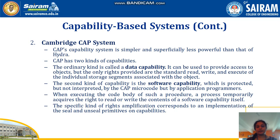The second type of compatibility based system is the Cambridge CAP system. The CAP system is not as powerful as the Hydra system, but it has two kinds of capabilities. The first one is data capability, which is like ordinary capability in other Unix operating systems.